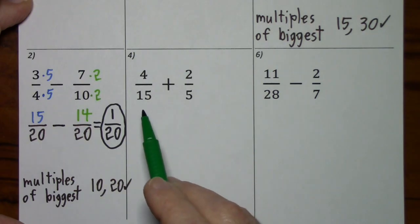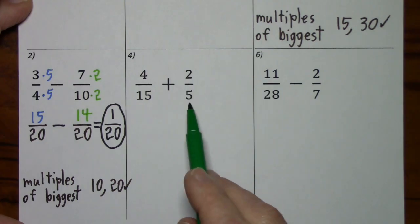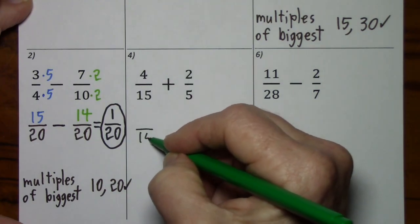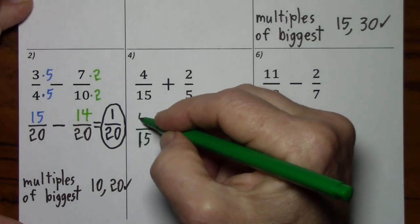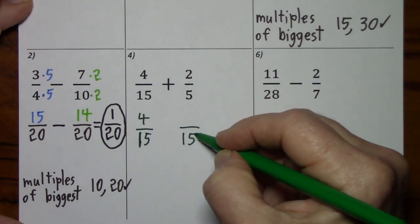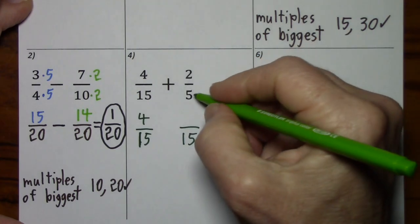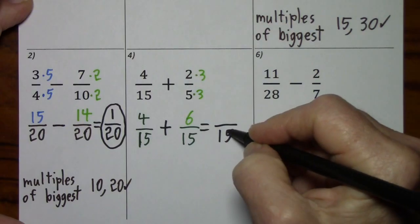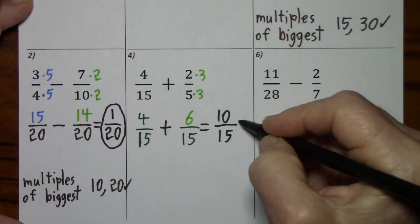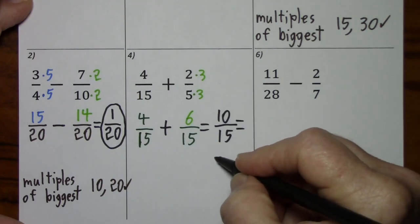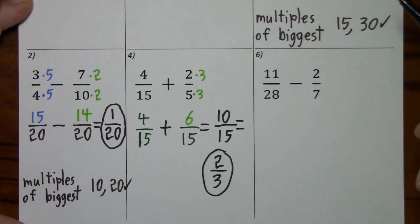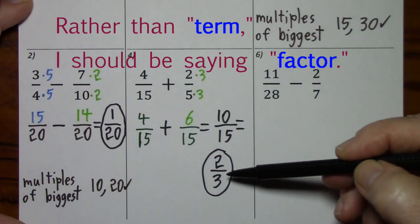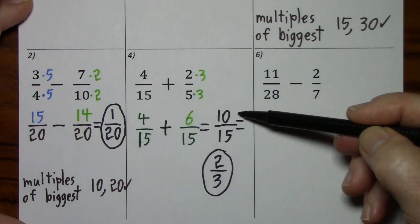Looking at number 4, we need common denominators. 15 will work because 5 goes into 15 — when I say goes into, I mean goes into evenly with nothing left over. This one we don't have to change; the numerator will stay the same. But this we have to change from 5 to 15, so we multiply by 3, multiply by 3. We keep our denominator. 4 and 6 is 10, but you have to simplify this. Just as you multiply by the same term top and bottom, you would divide by the same term top and bottom. That's how I went from 10 fifteenths to 2 thirds — I divided by 5 and divided by 5.